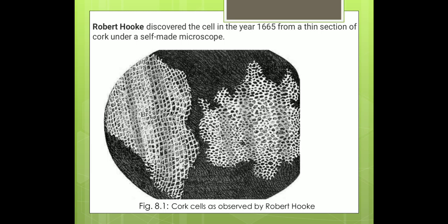Robert Hooke, a scientist, in 1665 observed slices of cork under a simple magnifying device. Cork is a part of the bark of a tree. He took thin slices of cork and observed them under a microscope made by himself. He noticed partitions, boxes, or compartments in the cork slice.